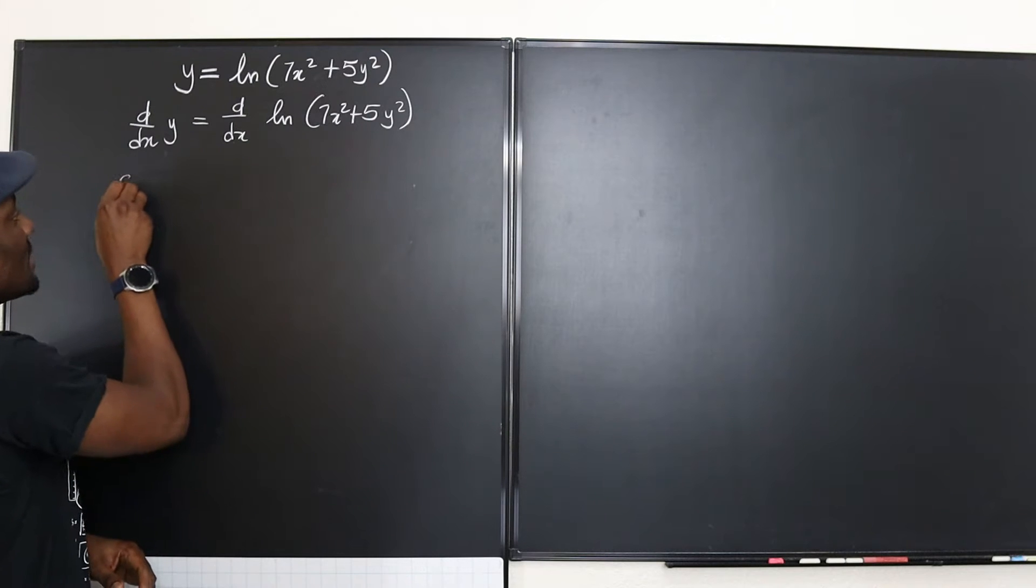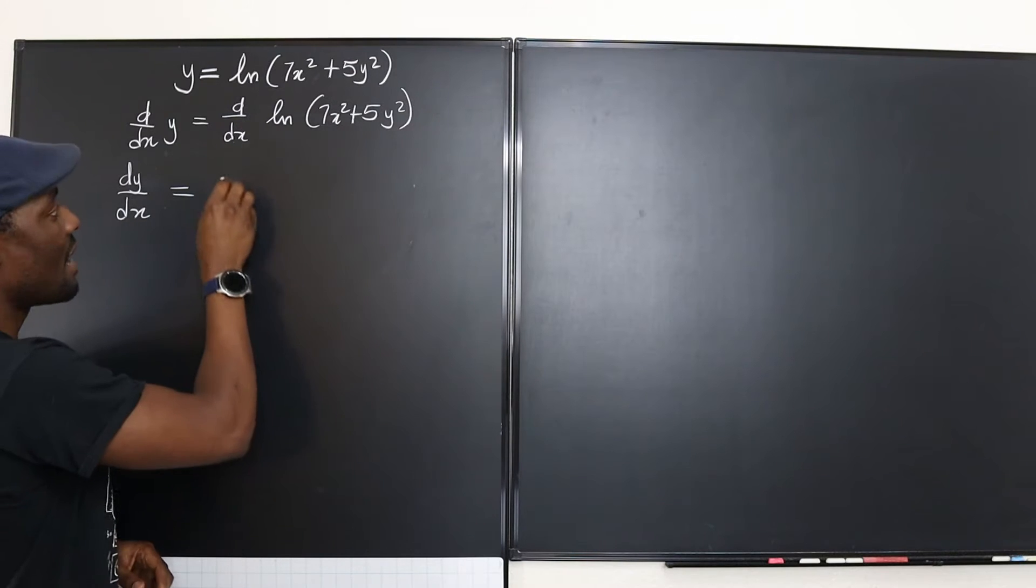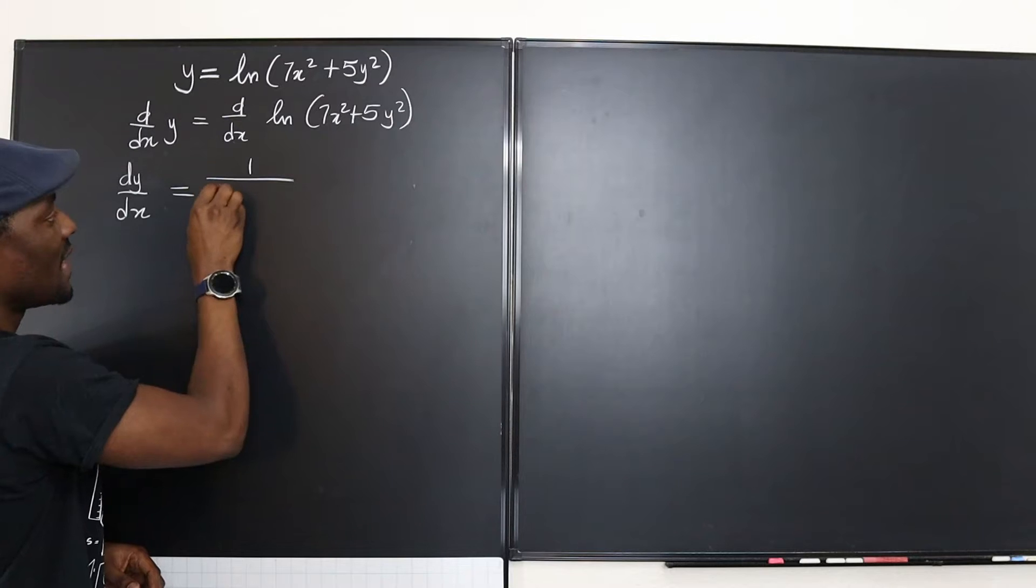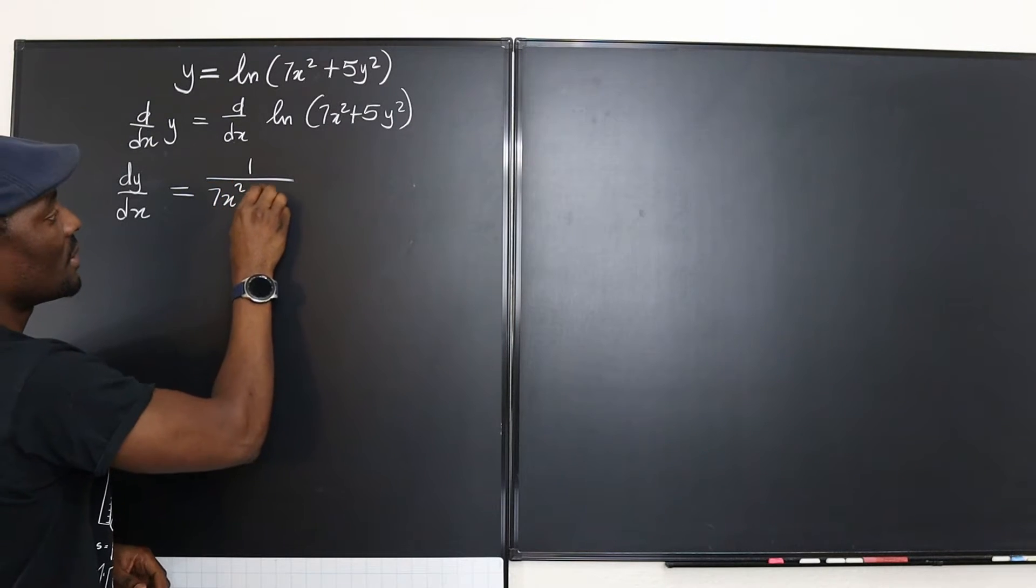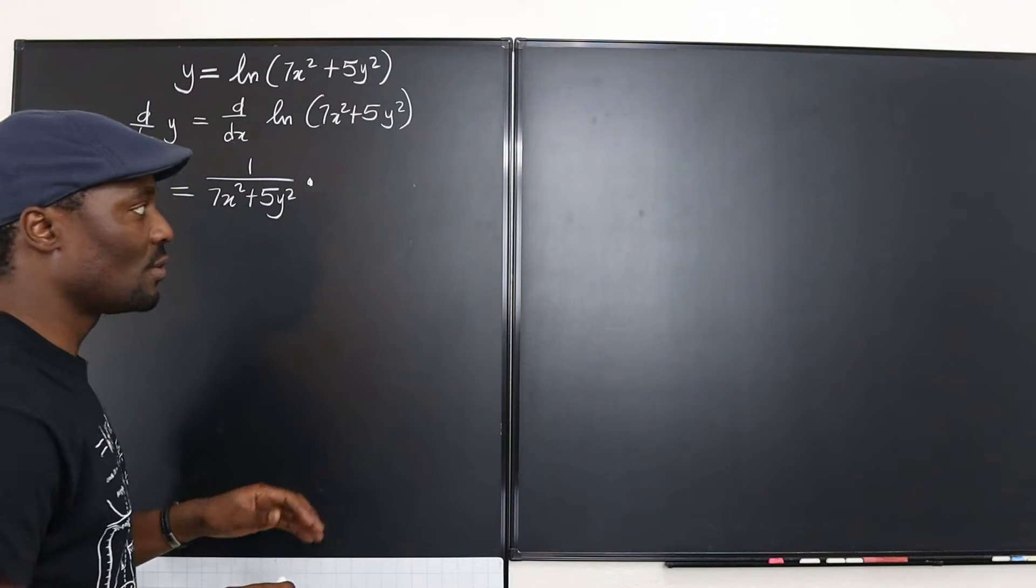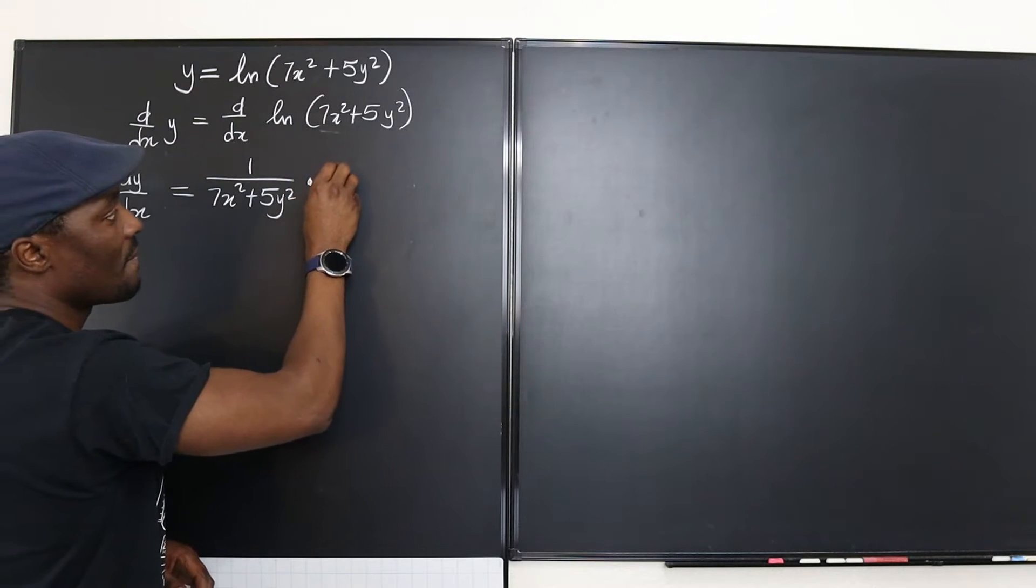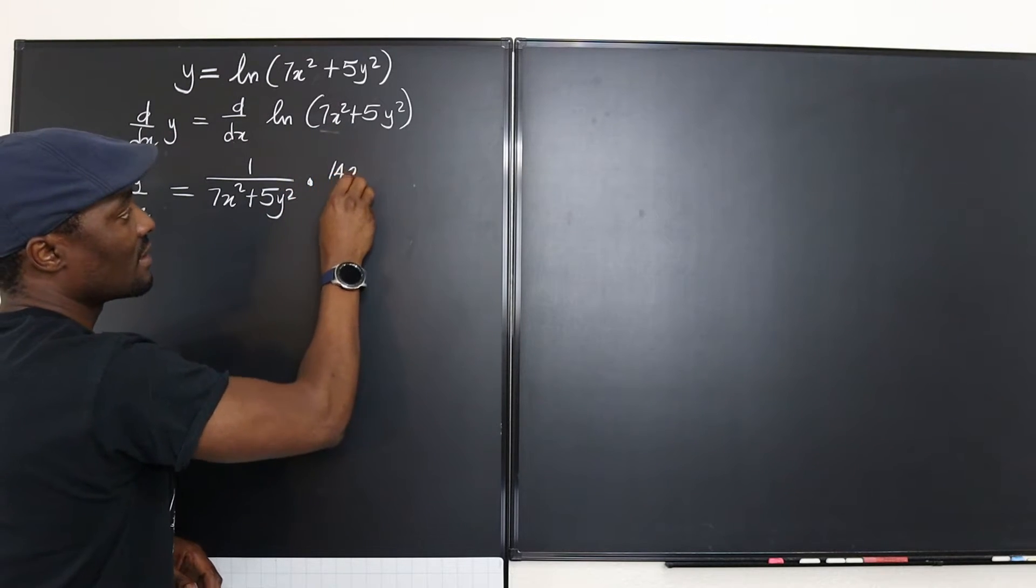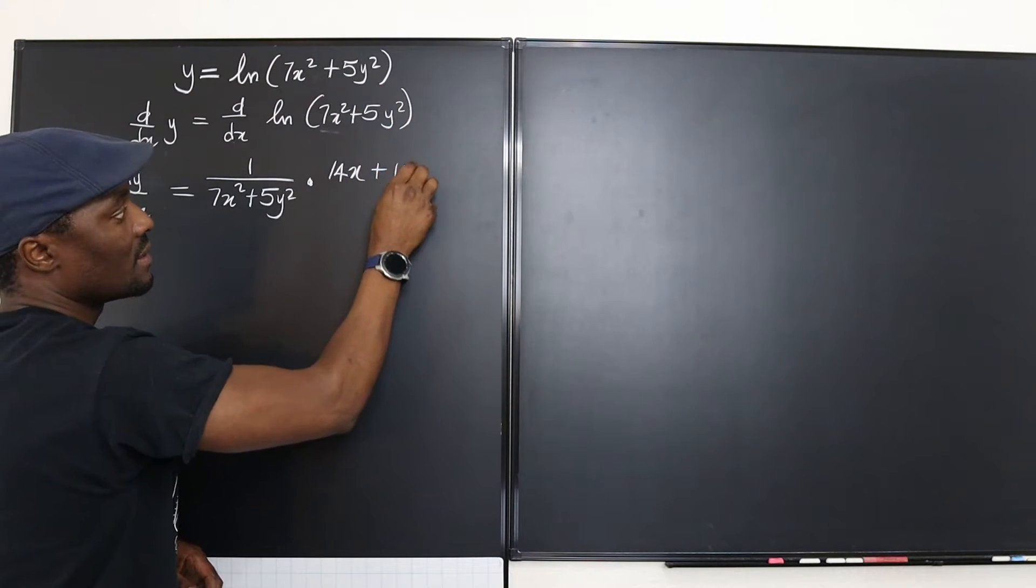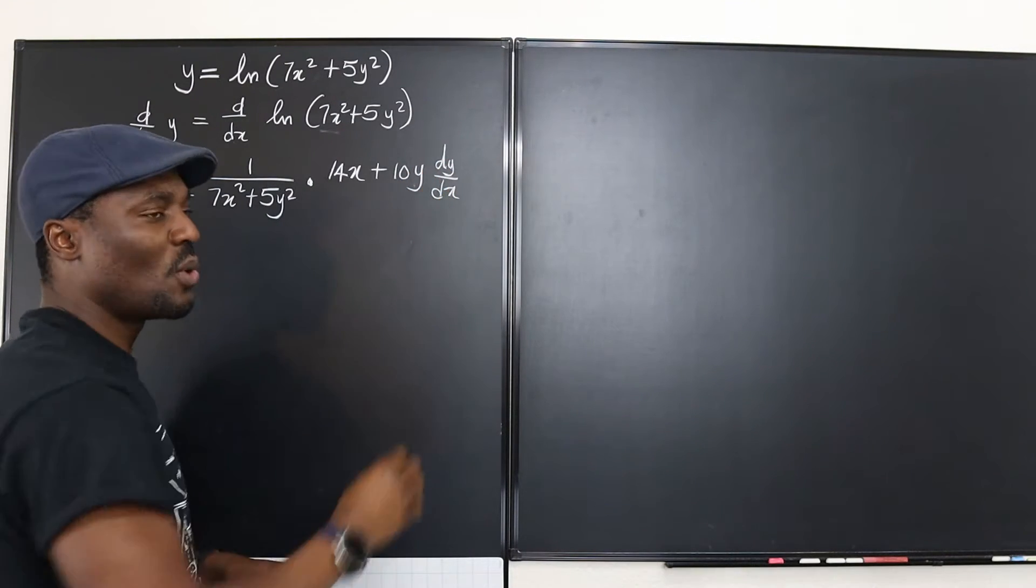You keep going inside and inside until you're done differentiating everything. So right now we have on the left hand side dy/dx. And on this side we're going to have to differentiate ln of anything you're going to get 1 over that argument which is 7x² + 5y² multiplied. Remember it's a chain rule, now we're going to differentiate what's inside. If you differentiate 7x², you're going to get 14x. And if you differentiate 5y², you're going to get 10y multiplied by dy/dx.